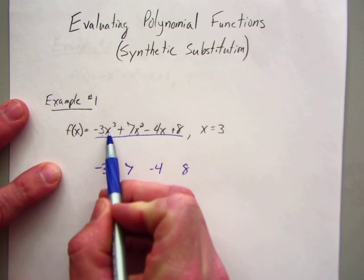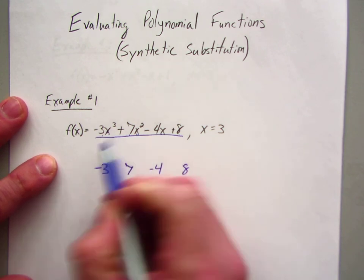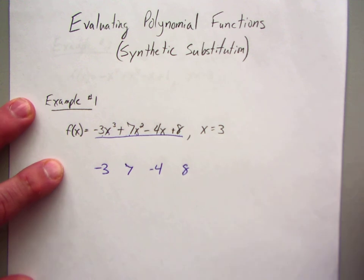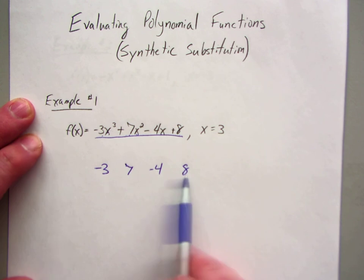Since I have a cubic function, I should have each of the following terms. If not, I will replace those with zeros, which we will be doing some examples of. So here I am not missing any terms, so therefore I have a value or a coefficient for each of these spots.